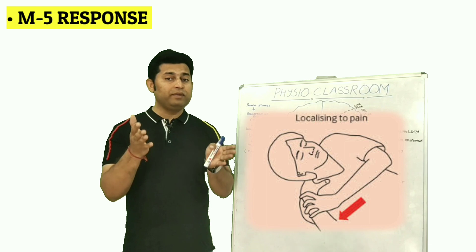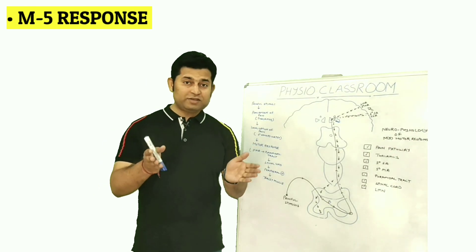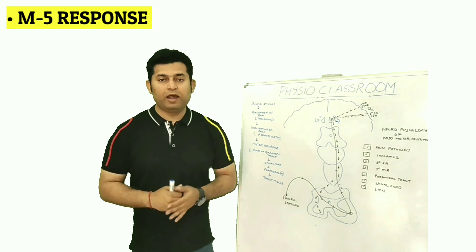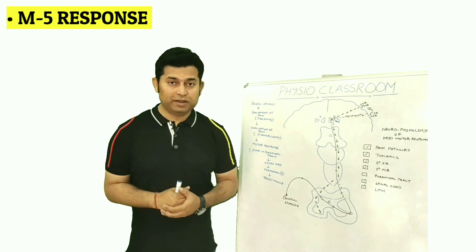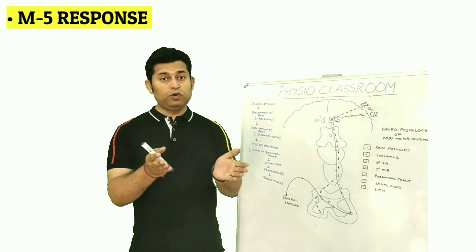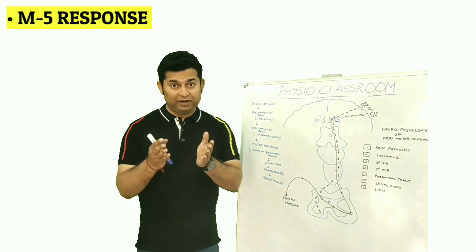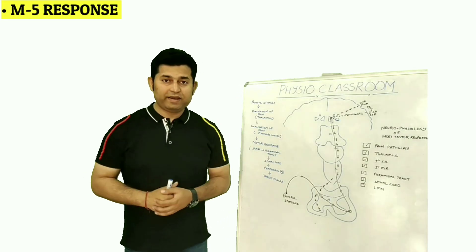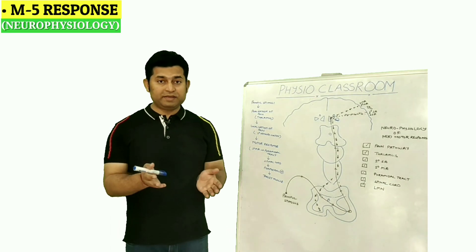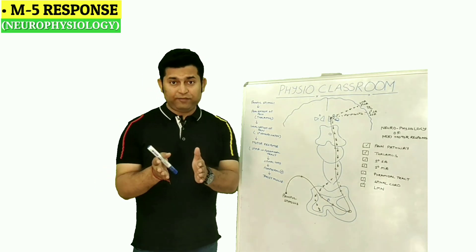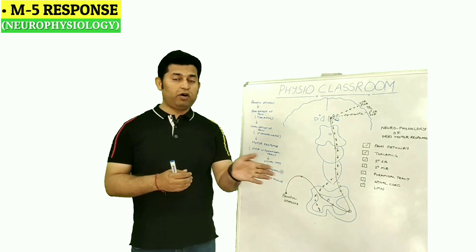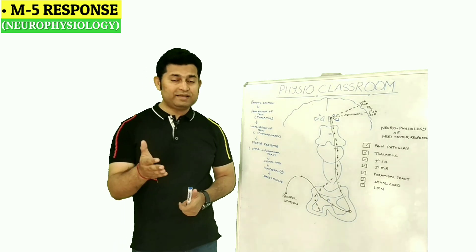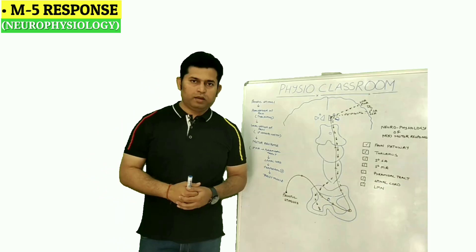The presence of this M5 motor response provides the therapist a lot of valuable information that can be used to further assess and treat such head injury patients. Now let's try to understand what actually happens in the background, right from the giving of the painful stimulus to the production of the localization to pain response.